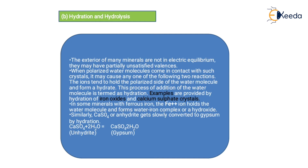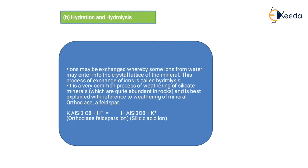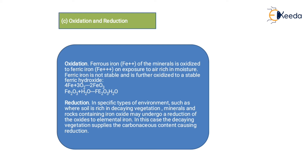In hydration, water molecules combine with a particular mineral to form a new substance. In hydrolysis, only the H⁺ ions from water enter into the mineral lattice and form a different substance. For example: orthoclase feldspar plus H⁺ ions form silicic acid ions. Oxidation and reduction: ferrous iron of the mineral is oxidized to ferric iron on exposure to air rich in moisture. Ferric iron is not stable and is further oxidized to stable ferric hydroxide: 4Fe + 3O₂ → 2Fe₂O₃; Fe₂O₃ + H₂O → Fe₂O₃·H₂O. When iron substances are exposed to the atmosphere they start to rust because they react with oxygen to form oxide — this process is called oxidation.